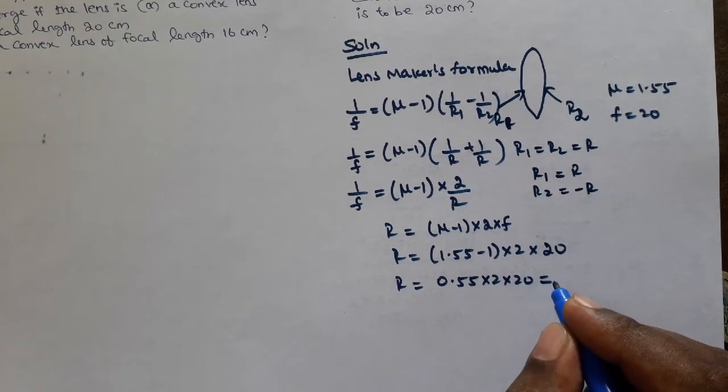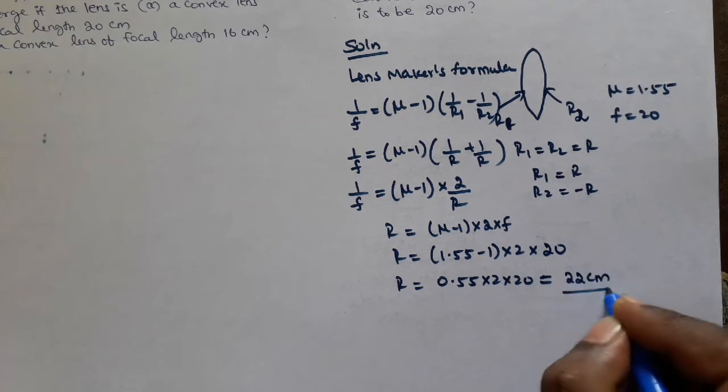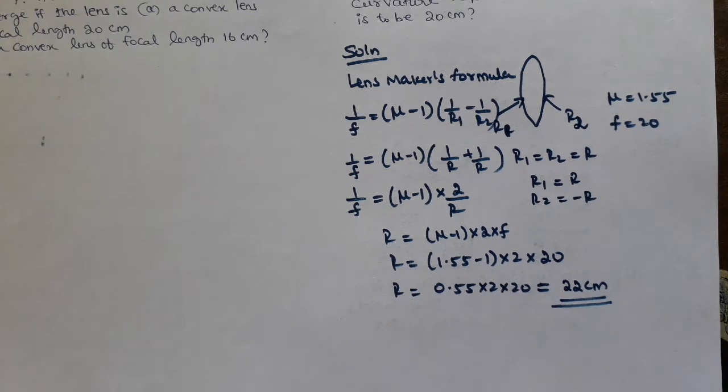R = 0.55 × 2 × 20 = 22 cm. So the radius of curvature is 22 cm to get a focal length of 20 cm. This answers question 9.7.